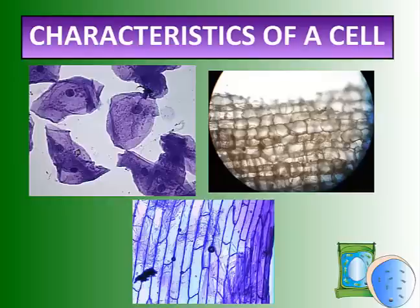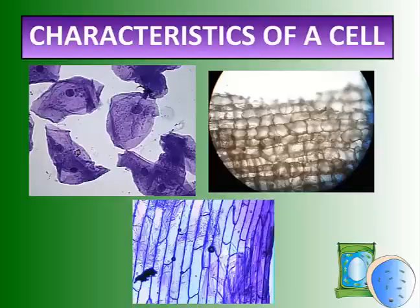We've got some dyed, kind of blobby ones on the top left. Some very organized ones on the top right and on the bottom. The top left are cheek cells — they've been stained or dyed to be that color. The one on the right is actually cells from cork, as in the cork you would find in the top of a bottle. And the bottom there are onion cells, and those too have been dyed so we can see them better.